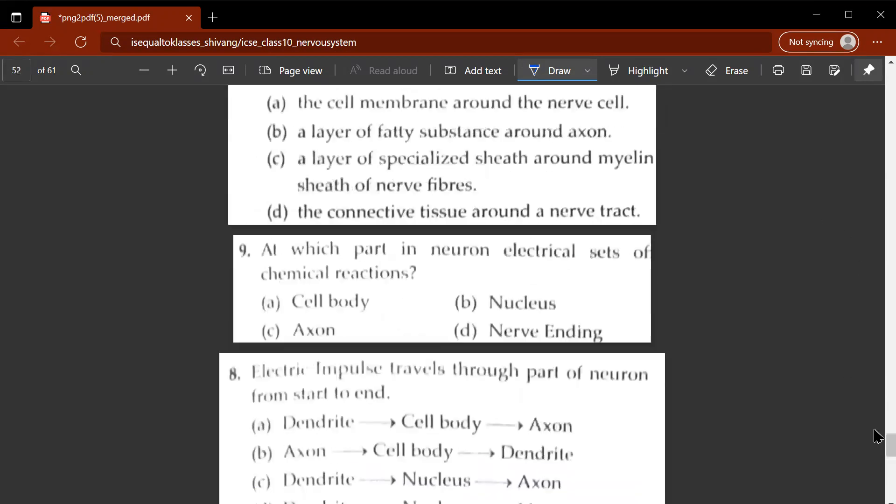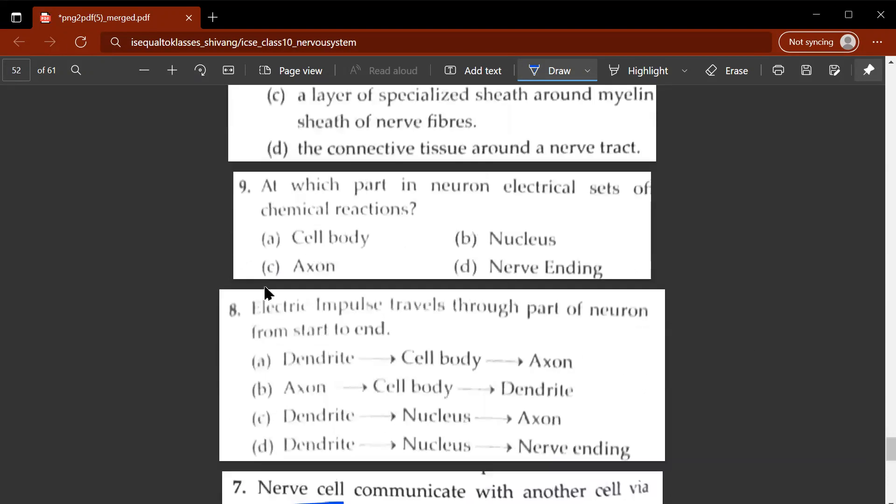Eighth question, electric impulses travels through part of the neuron from start to end. So what will be the answer? The correct answer would be dendrite. So from dendrite to cell body and from cell body to axon. Ninth question, at which part in neuron electrical sets off chemical reactions? That would be at the nerve ending.